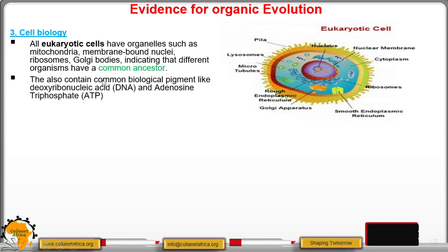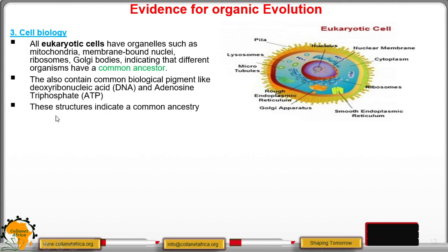Eukaryotic cells also contain common biological pigments like DNA and adenosine triphosphate, also abbreviated as ATP. There are three phosphate groups — that is why it is called triphosphate — and it is a form of energy stored in the cell. These structures indicate a common ancestor.